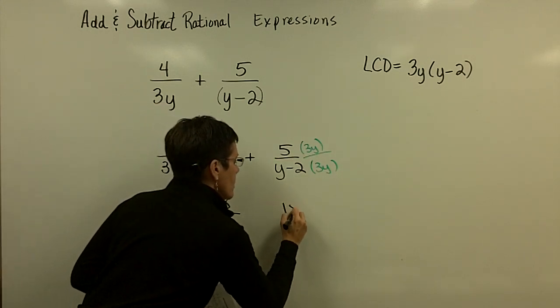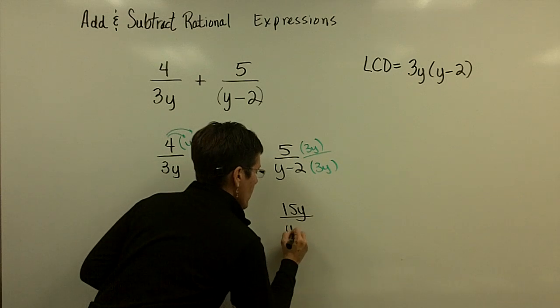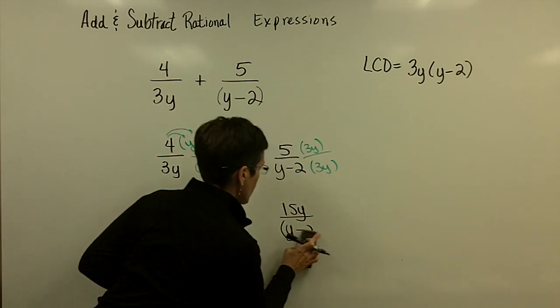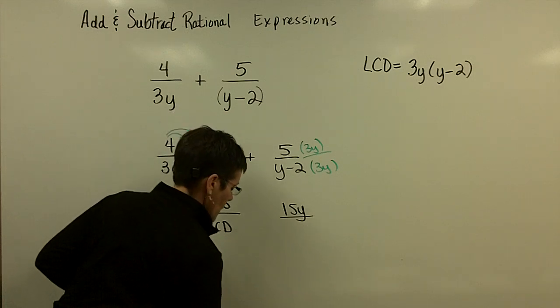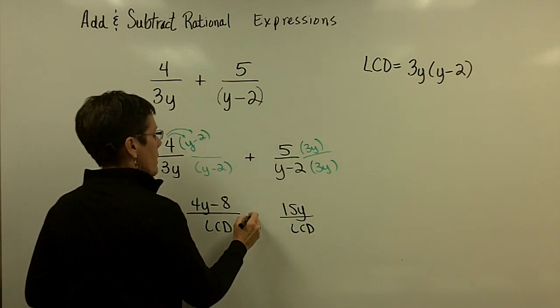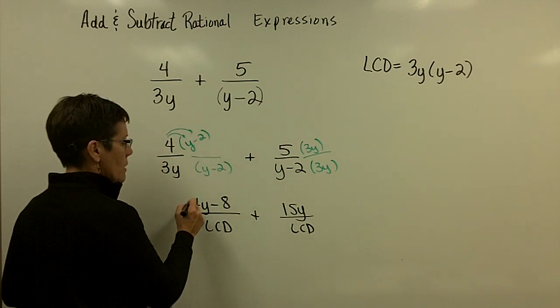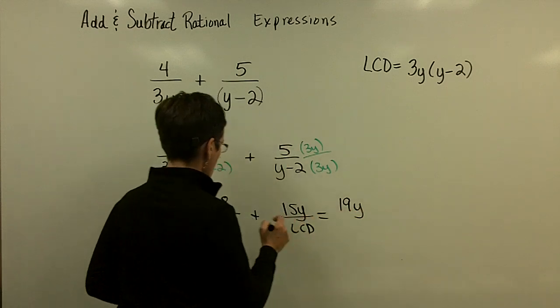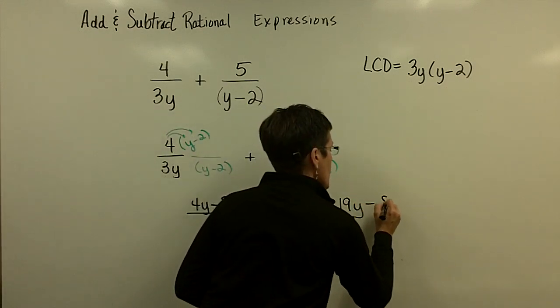So again, 15y over y minus 2 times—I'm going to go ahead and call it LCD like I did over here. It's both of those: it's the 3y and the y minus 2. But I am adding these two fractions.